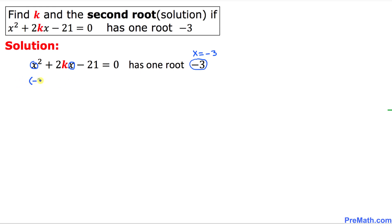That's going to become negative 3 square plus 2k times negative 3 minus 21 equal to 0. Let's simplify furthermore. Negative 3 square is going to be 9 minus 6k minus 21 equal to 0.